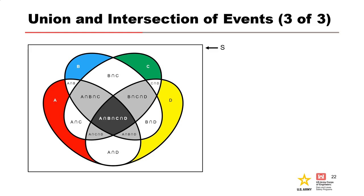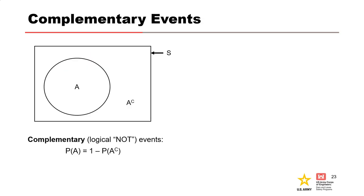Two events are said to be complementary when one event occurs if and only if the other does not — for example, a levee breaches or it does not; a dam overtops or it does not. You will see this when discussing event tree branches: in one branch an event occurs, and in the complementary branch the event does not occur, equal to 1 minus the probability of the event occurring. When events are complementary, the sum of their probabilities equals 1.